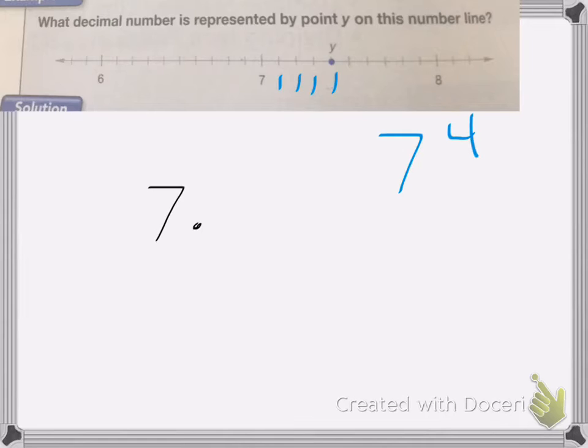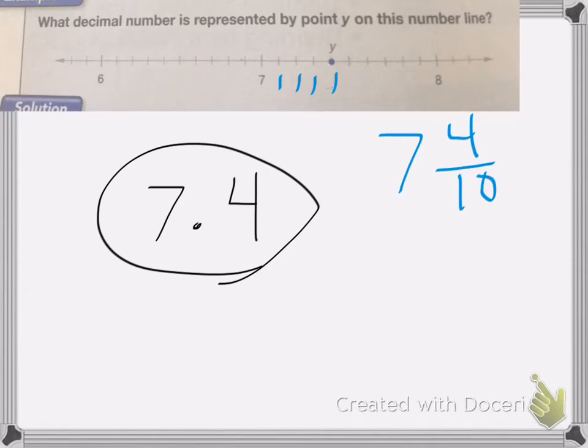So if you write it as a fraction, it would look like this. 4 tenths. So to write that as a decimal, it's going to be 7 and 4 tenths. And that's the correct answer.